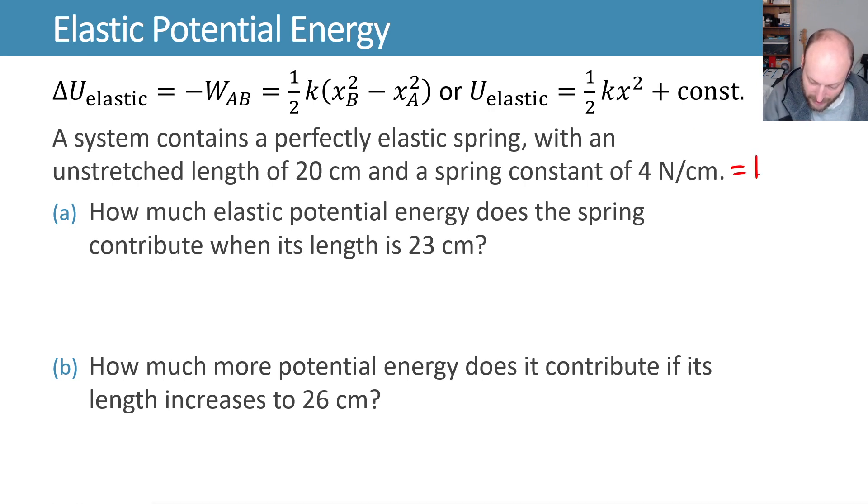Well, let's call this my spring constant k. And let's say that my elastic potential energy now is one-half kx squared. That means we can plug in one-half, k is 4 newtons per cm, my x is 3 cm, and then that gets squared. And to get this in units of joules, we need to do a unit conversion.